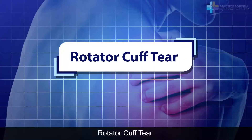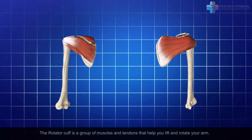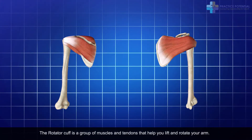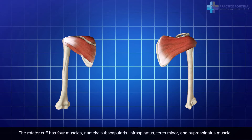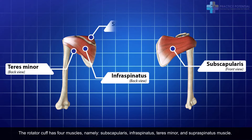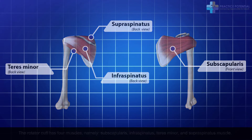Rotator Cuff Tear. The rotator cuff is a group of muscles and tendons that help you lift and rotate your arm. The rotator cuff has four muscles, namely subscapularis, infraspinatus, teres minor, and supraspinatus muscle.